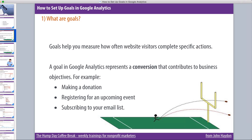So what are goals? Goals is a feature within Google Analytics — it's the most important feature and really the prerequisite for getting the most value out of Google Analytics. Essentially, goals help you measure how often website visitors complete specific actions. The most common type of goal is a conversion: someone makes a donation, joins your email list, signs a petition, registers for an upcoming event, and so forth.